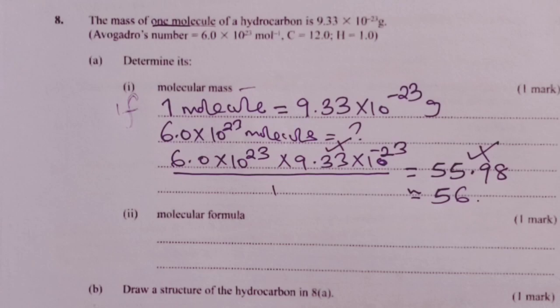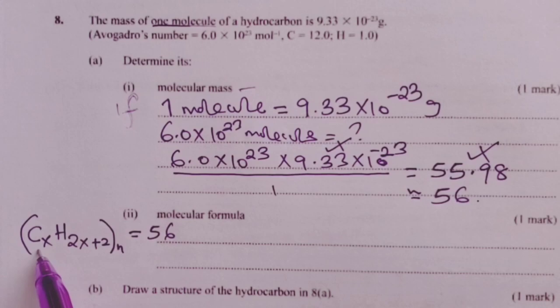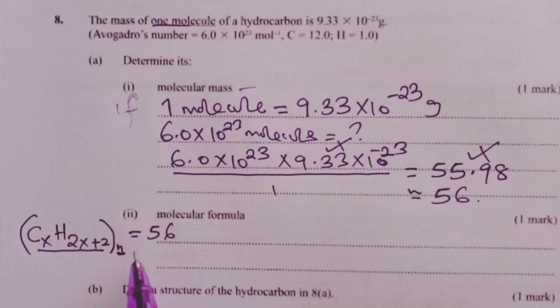For part A Roman 2, asking us to determine the molecular formula for our hydrocarbon, the examiner expected the candidate to try out the general formulae for the three homologous series of the hydrocarbons, beginning with the alkanes. We would equate this to the molecular mass that we have just calculated. This is the general formula for alkanes. We would try this out. If we fail to get a whole number N, then our hydrocarbon would not be an alkane. We would then do the next general formula for alkenes, try that again until we reach a case where N turns out to be a whole number.